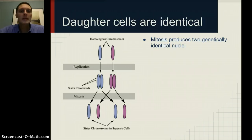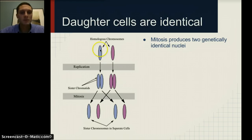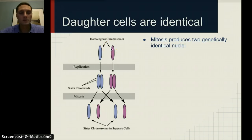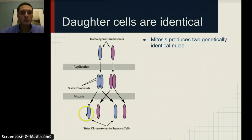A couple other things to add before we finish our discussion of cell division: daughter cells are identical. Our homologous chromosomes — say the blue is from dad and the pinkish color from mom — are replicated, so now there are duplicate versions. After mitosis, these two separate cells each get one of each chromosome, just like we started with at the beginning. They've each got one of each.